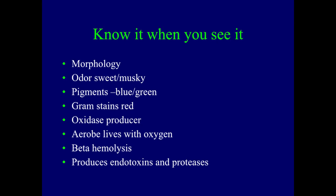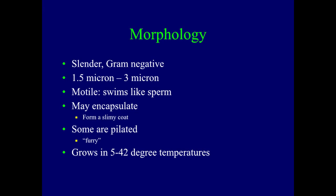It gram stains — a stain used on slides when looking for bacteria — and it stains red, so we call it a gram-negative organism. It produces oxidase, which we can test for to confirm we're dealing with Pseudomonas. It lives with oxygen, so we call it an aerobe, and it has beta-hemolysis — it can lyse blood cells — and produces endotoxins and proteases that cause trouble inside the body. It's a slender gram-negative rod, only 1.5 to 3 microns long, and it's motile, meaning it can move — it can swim like a sperm using flagella on one end.